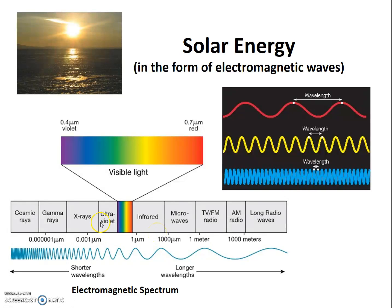Ultraviolet radiation has the shortest wavelengths of those we'll be looking at, and infrared has the longest wavelengths of the types of radiation we'll be studying.